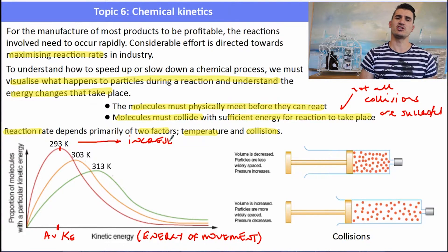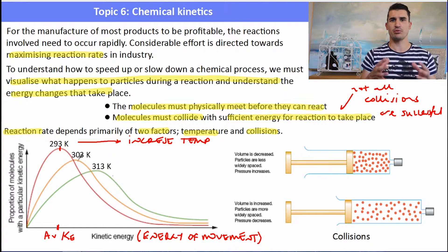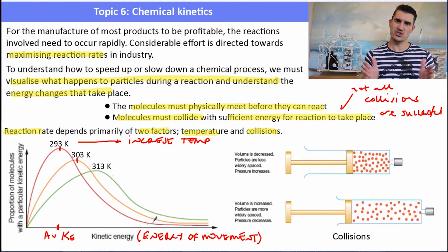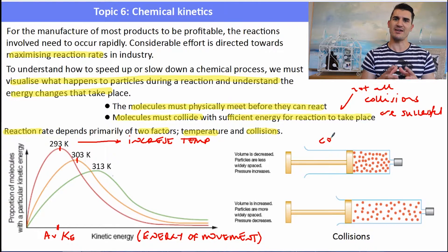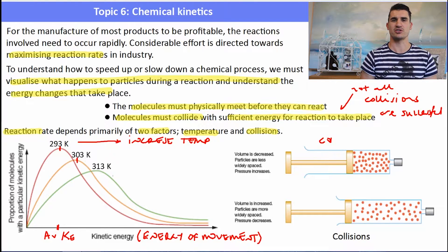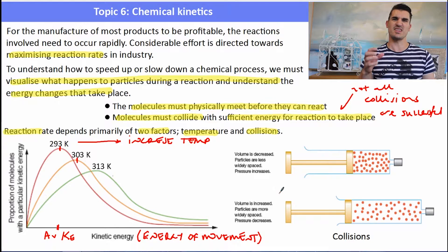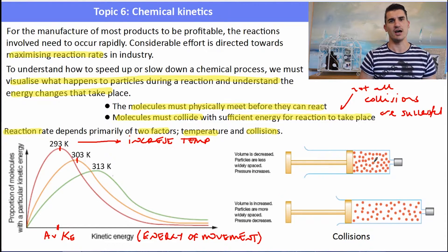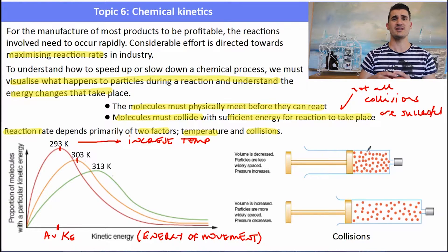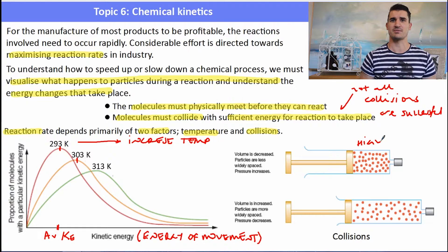Looking at collisions, one way to maximize the number of collisions is with the pressure of a vessel. If we shorten or remove the space between molecules, we get an increased number of collisions. High-pressure systems produce a lot of collisions at any given time. In a low-pressure vessel, the particles are spaced far apart with lots of empty space between them, so we won't have as many collisions.